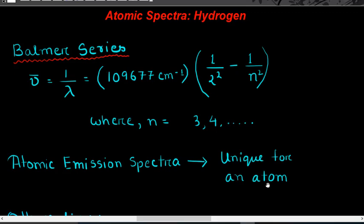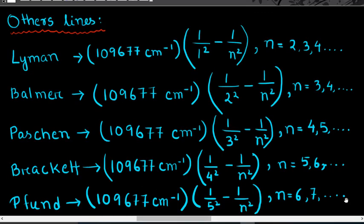The atomic spectra of hydrogen provides information about the structure of the atom and also about the properties of an element. Balmer gave an expression for some of the lines of the hydrogen spectrum, for which the wave number is: 109,677 cm⁻¹ × (1/2² − 1/n²). However, Balmer was not able to give expressions for all the lines, so other scientists gave expressions for the remaining lines.